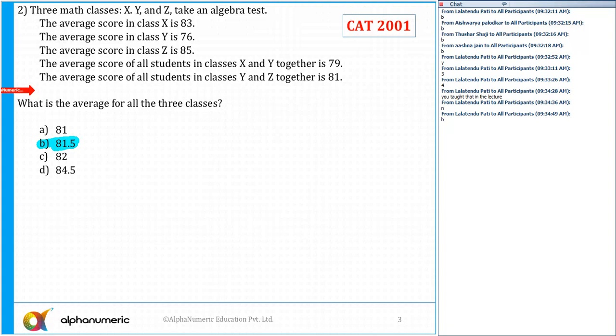The average of class X is 83, the average of class Y is 76, and the average of X and Y together is 79.